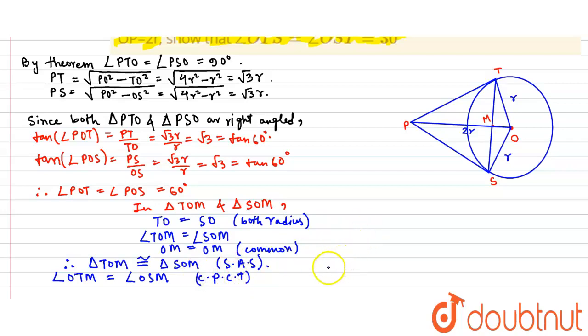Now if we add the angles in triangle TOS, we will get that angle OTM plus angle OSM, OTM here, OSM, plus TOS.